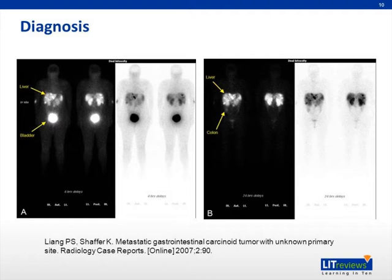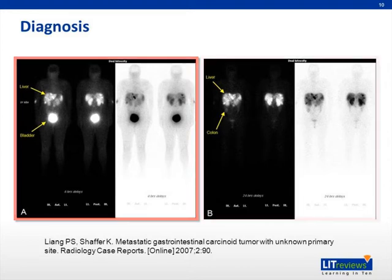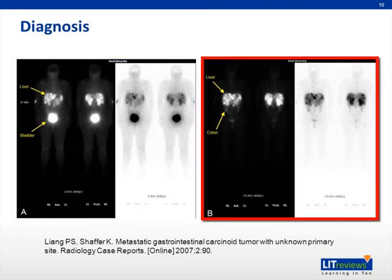On this slide, you can see an example of an octreotide scan. On the left are the 4-hour delay images demonstrating uptake in the liver and bladder. On the right-hand images at 24 hours, there is uptake only in the liver. This scan helps to show the hepatic metastases of this patient's carcinoid.